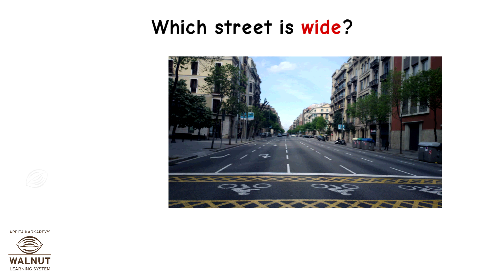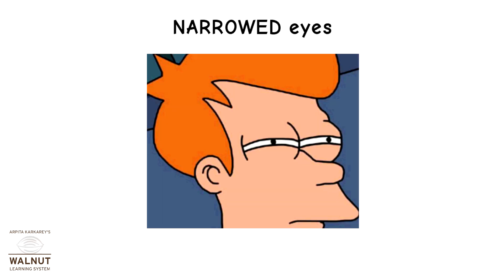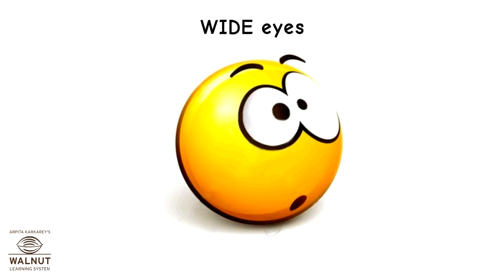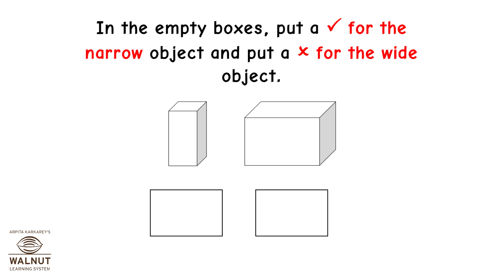These are narrowed eyes. These are wide eyes. In the empty boxes, put a tick mark for the narrow object and put a cross mark for the wide object.